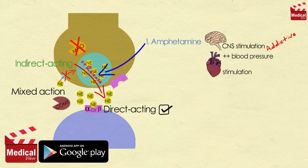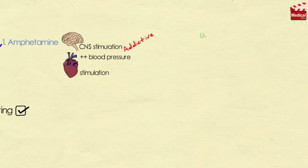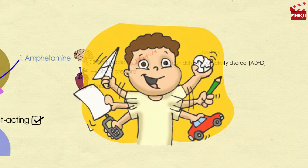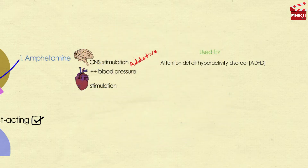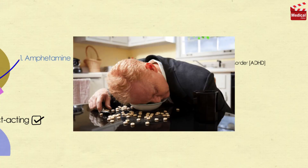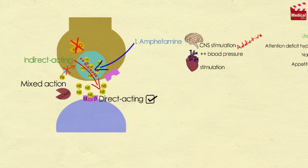Its therapeutic use is limited due to psychological and physiological dependence. But it is used in certain conditions such as attention deficit hyperactivity disorder, known as ADHD, which is a condition in some young children characterized by hyperkinetic behavior and lack of ability to be involved in any activity for longer than a few minutes. It is also used in narcolepsy, a relatively rare sleep disorder characterized by uncontrollable bouts of sleepiness during the day, and also in appetite suppression. More information about amphetamine and its derivatives will be discussed in the CNS lectures.